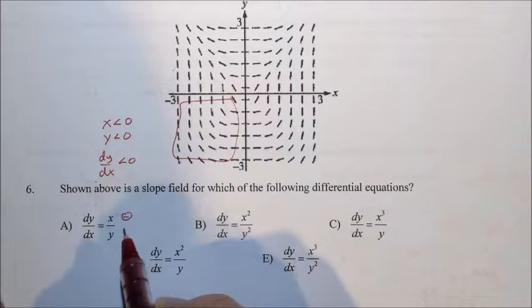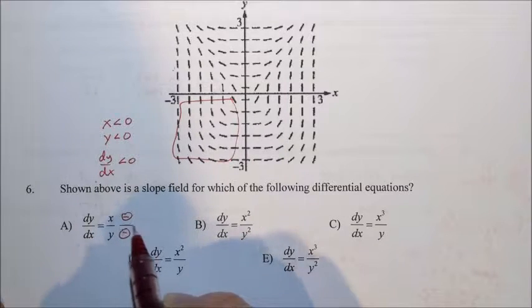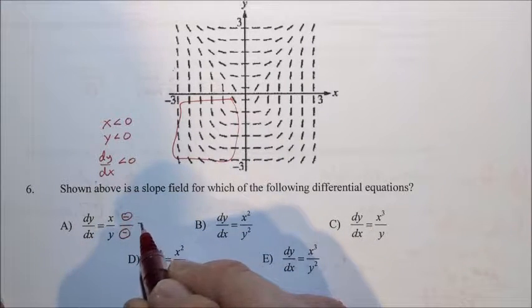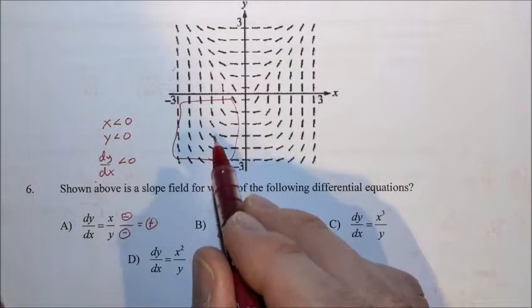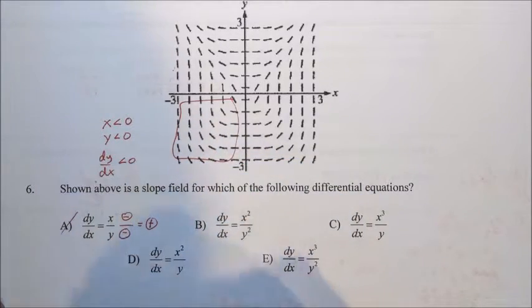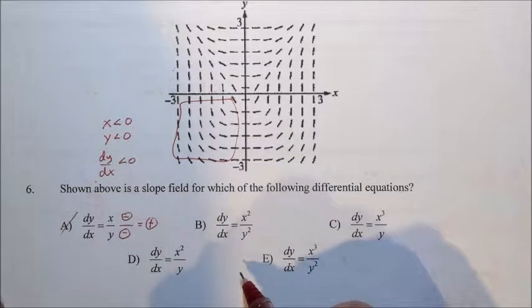Look at all the slopes in this region, they are all negative. So when x is less than zero and y is less than zero, dy/dx has to be less than zero. If x is negative and y is negative, we have a negative divided by a negative, which is a positive, but that's not what we see here. We see negative slopes, so A is out.